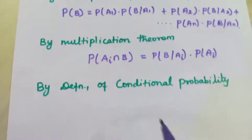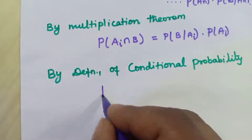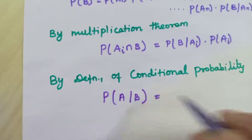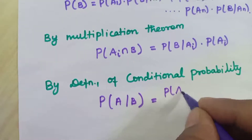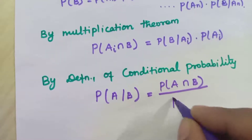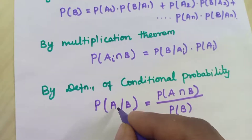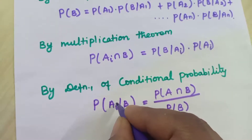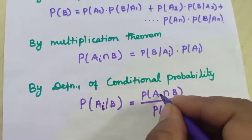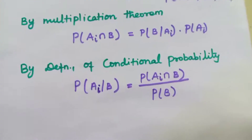Now we use the definition of conditional probability. Probability of A over B is equal to probability of A intersection B divided by probability of B. Since we have N events, instead of A we write Ai: probability of Ai over B equals probability of Ai intersection B divided by probability of B.